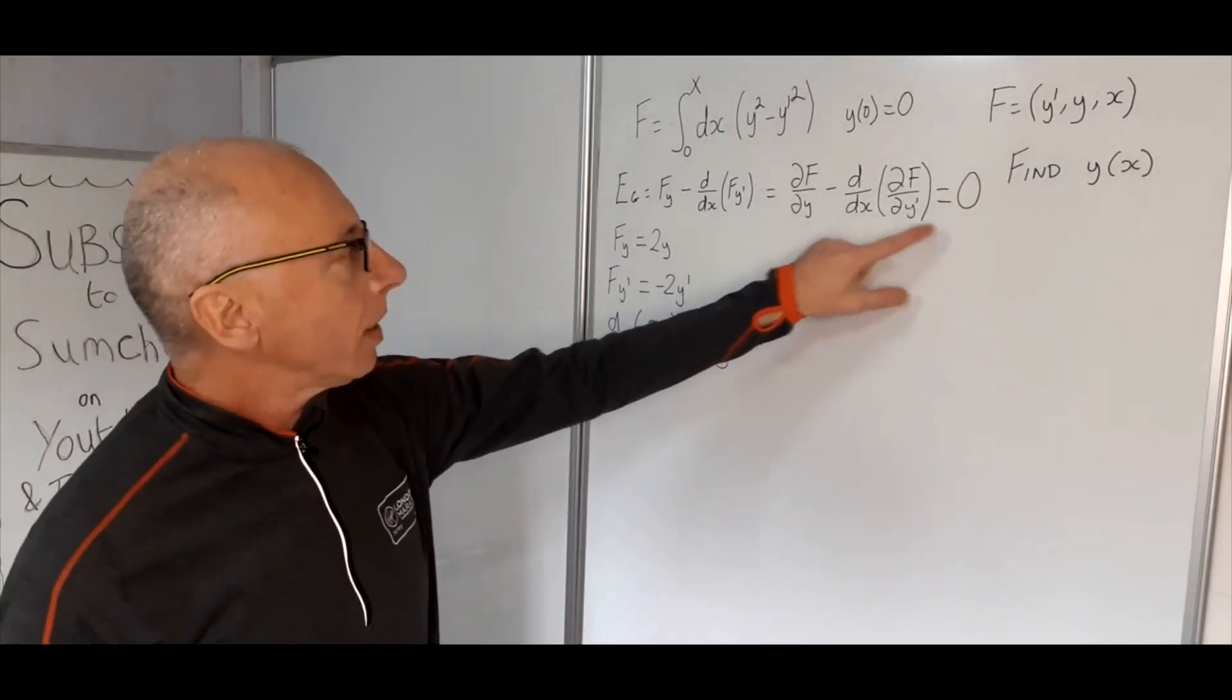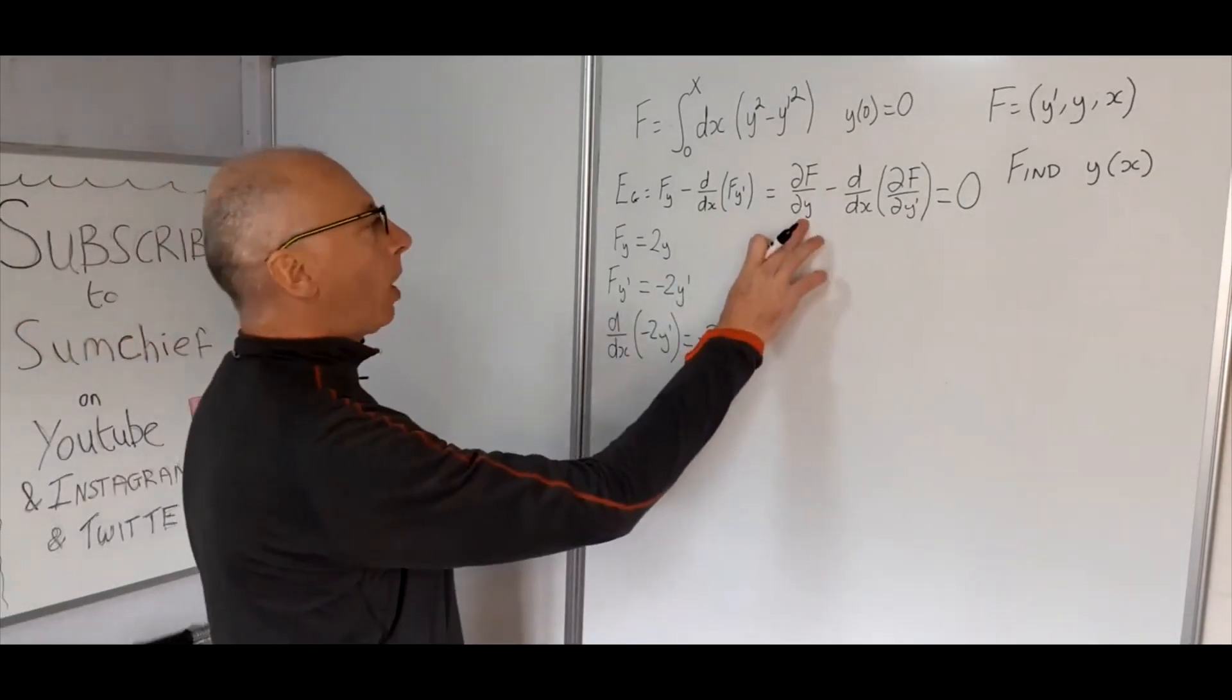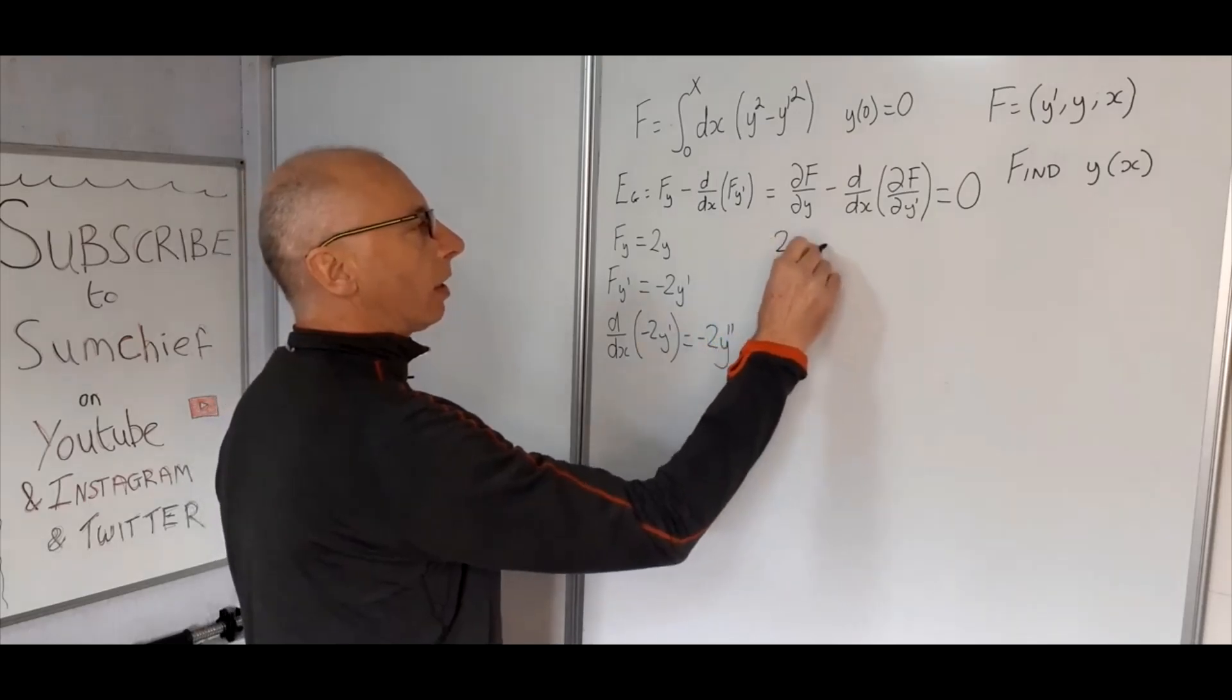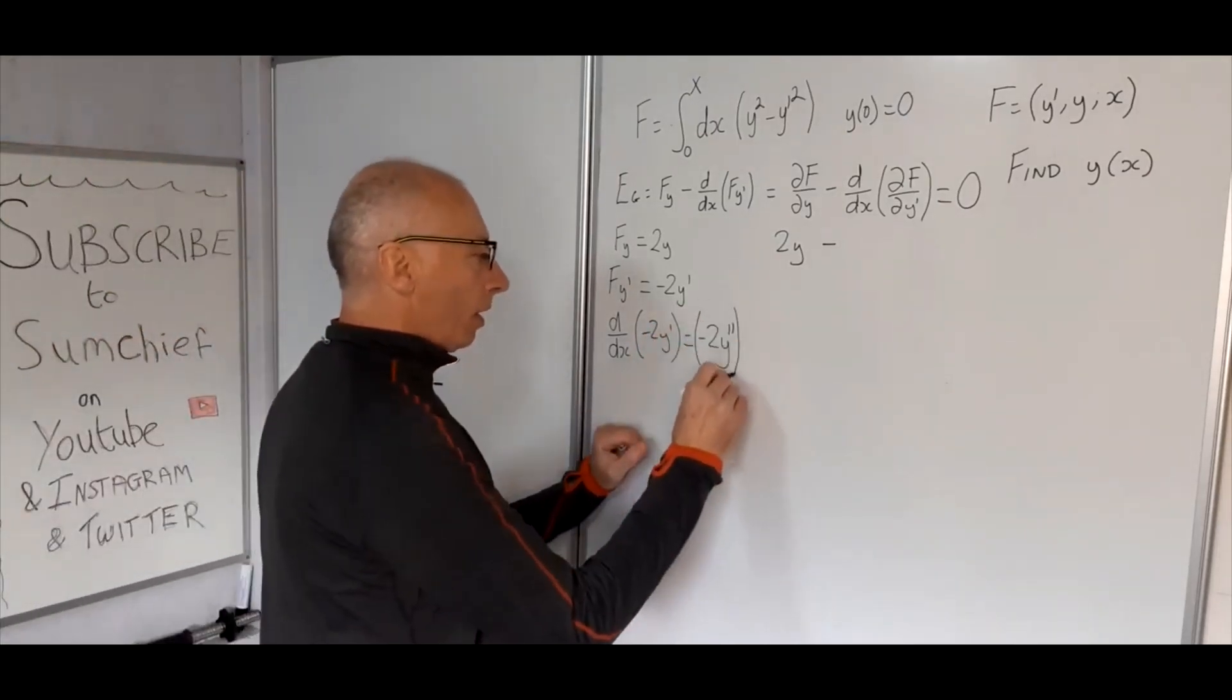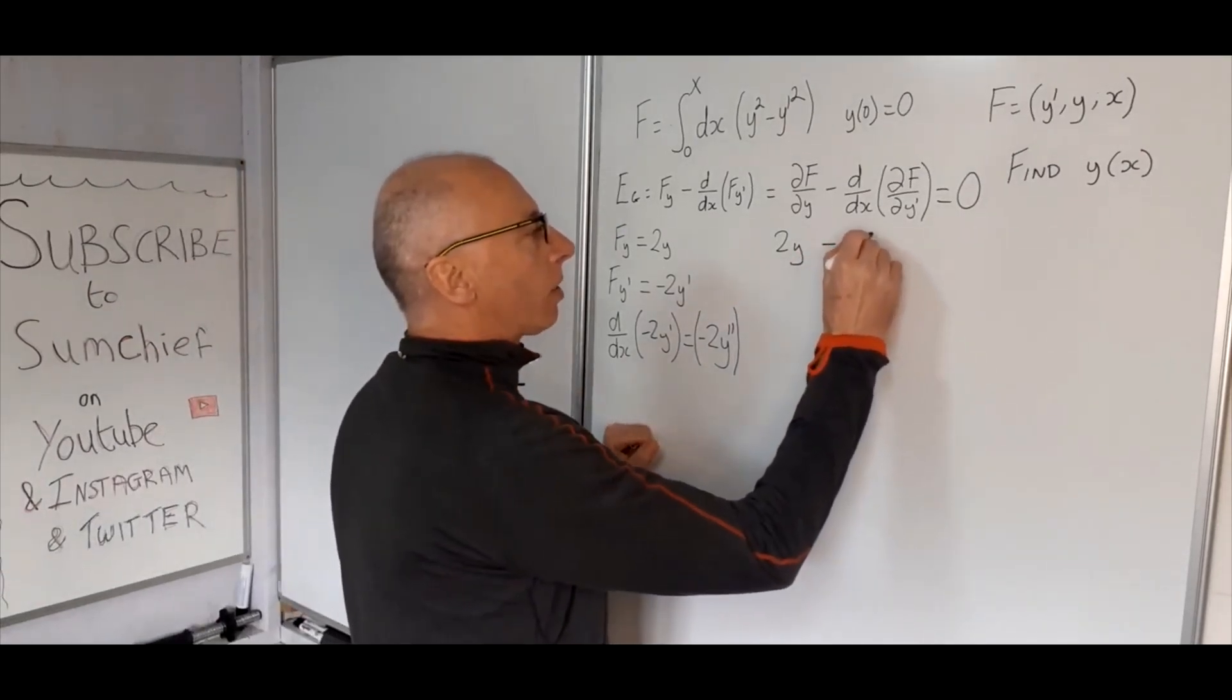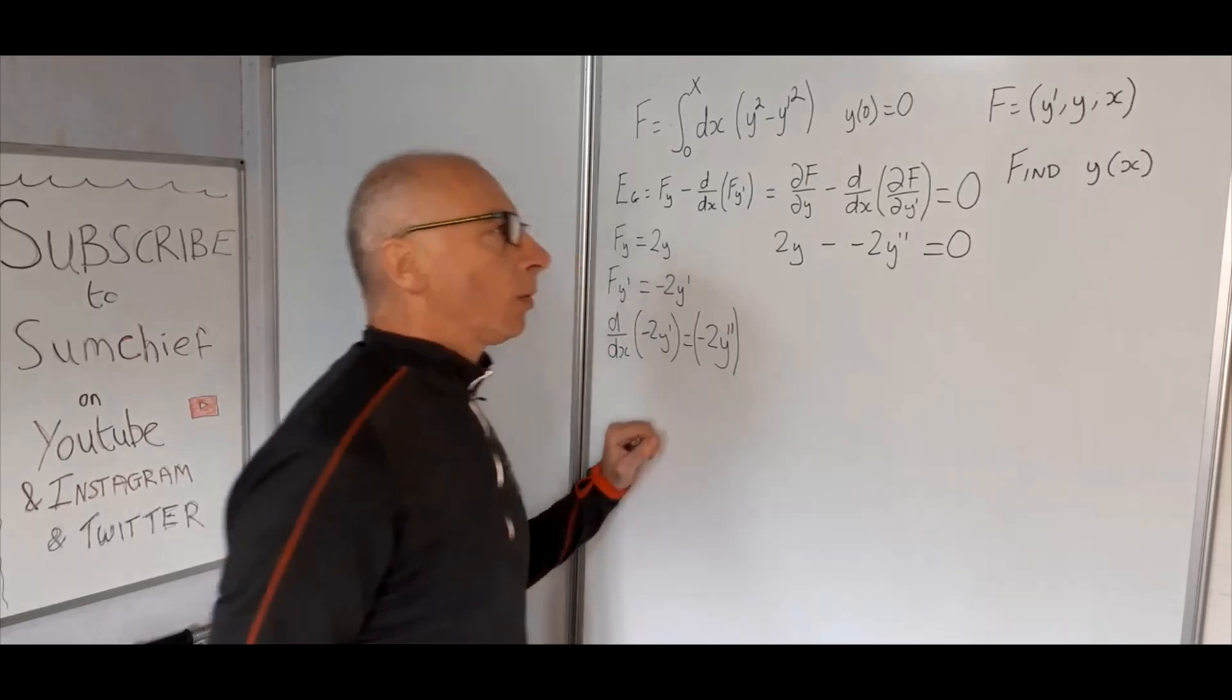So all we do now is put that into this and make it equal to 0. Partial of f with regards to y—that's just 2y. Our total derivative is minus 2y double prime. So I'll just put that out of the bracket so we don't miss the minus. So minus 2y double prime, and that equals 0.